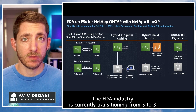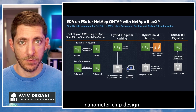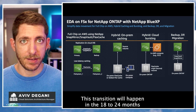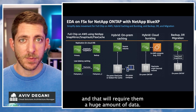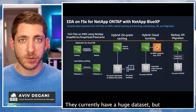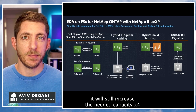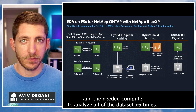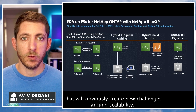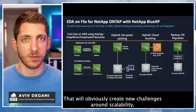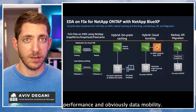The EDA industry is currently transitioning from 5 to 3 nanometer chip design. This transition will happen in the next 18 to 24 months and will require a huge amount of data. Their current data sets are already large, but this transition will increase the needed storage capacity four times and the compute needed to analyze all that data six times. That will obviously create new challenges around scalability, performance, and data mobility.